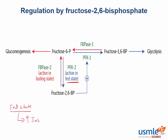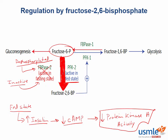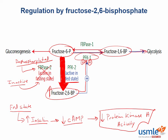In the fed state, high insulin levels decrease the amount of cyclic AMP and therefore decrease protein kinase A activity. With decreased protein kinase A activity, the enzyme fructose bisphosphatase II will end up being dephosphorylated, which means that only phosphofructokinase II will be active. The body will then start converting fructose 6-phosphate into fructose 2,6-bisphosphate, which in turn activates phosphofructokinase I, as you can see here. With phosphofructokinase I being active, this allows glycolysis to proceed by converting fructose 6-phosphate into fructose 1,6-bisphosphate, which then enters the glycolysis pathway.